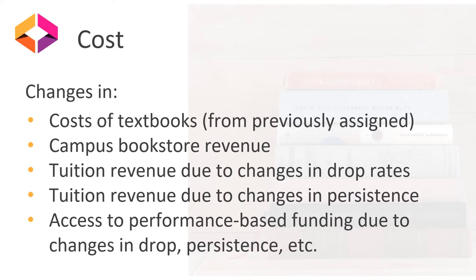campus bookstore revenue, tuition revenue, and more. It can be challenging to get all of the data pieces for your metrics — for example, maintaining a count of courses that use open textbooks as well as the number of students enrolled in those courses and collecting that data on a semester basis. As librarians, we typically don't have access to all the pieces of data for these cost metrics, especially the latter ones. In this case, you may need to collaborate with other offices on your campus, such as the budget office or the Center for Institutional Research.